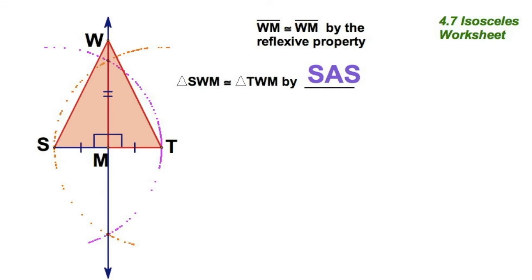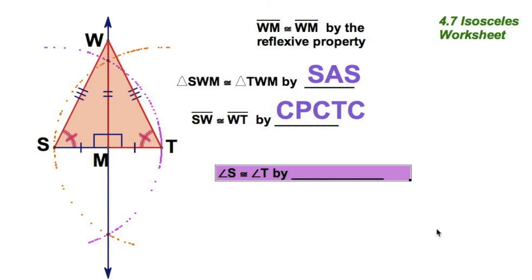You can see it. Side, angle, side. So that's your reason that these two triangles are congruent. And then, from there, we're going to say, therefore, these two segments are congruent by corresponding parts of congruent triangles. I could also conclude that these two angles are also congruent by CPCTC.